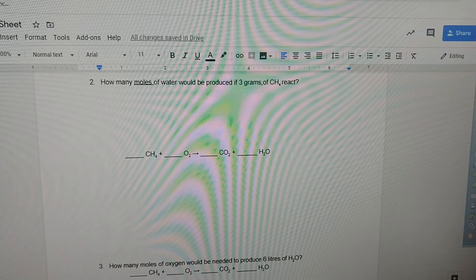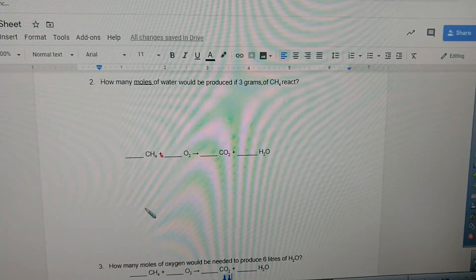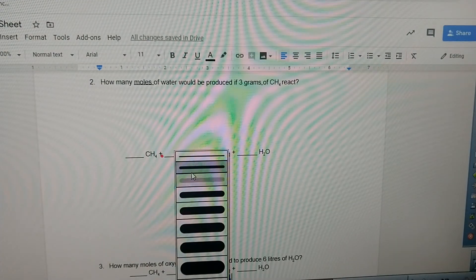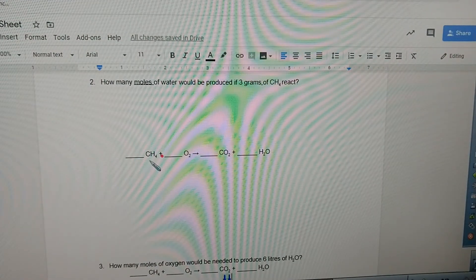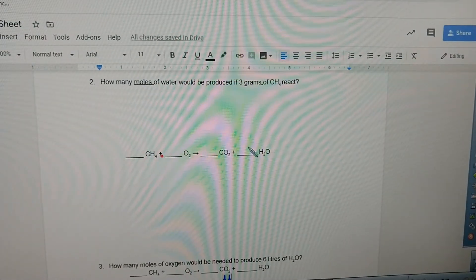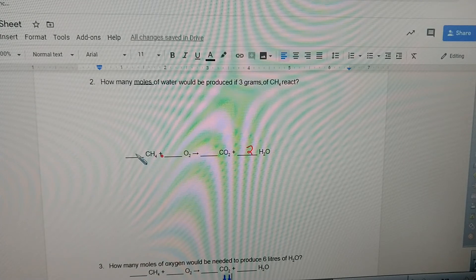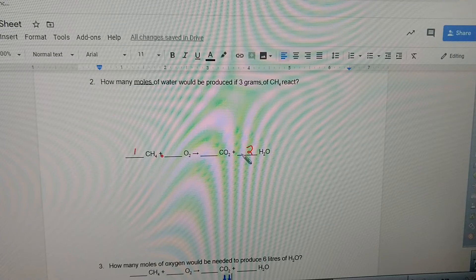So first thing we want to do, we're gonna balance this. We've got methane, oxygen, carbon dioxide, water. We're gonna need a two here. That gives me four hydrogens, four hydrogens. That's gonna be a one. So got two, four oxygen, one, two, one, two is the balance. That's the first thing.